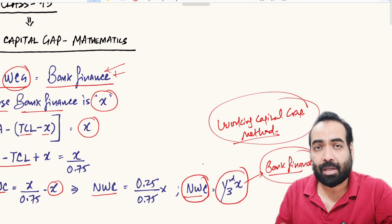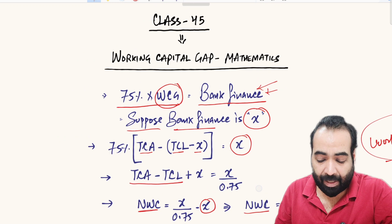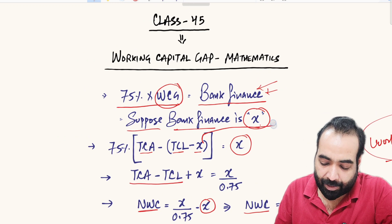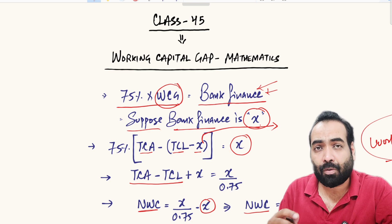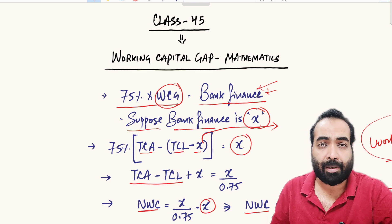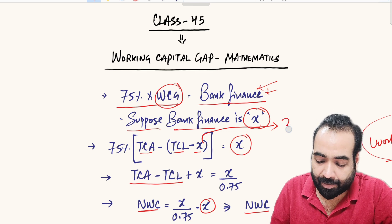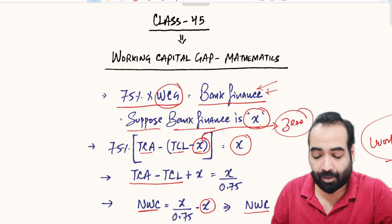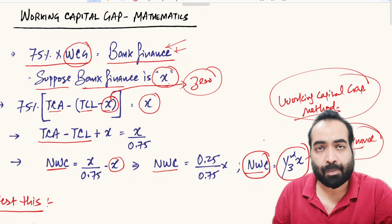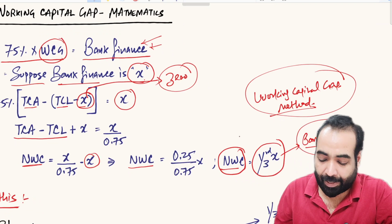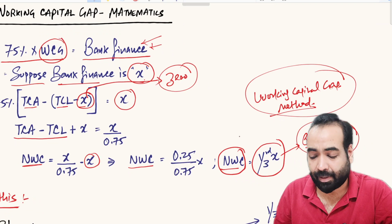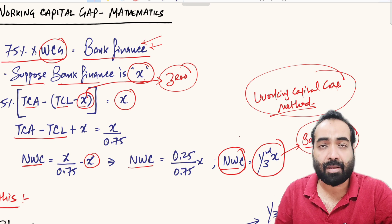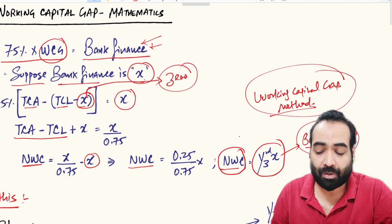This result comes with an important limitation. The key point of discussion is how the short-term portion of long-term debt is treated. In my derivation I have assumed it as zero — X is treated as purely working capital bank finance only. That is why this clean result is possible. So if NWC is one-third of your bank finance, your working capital gap method will justify your limits.